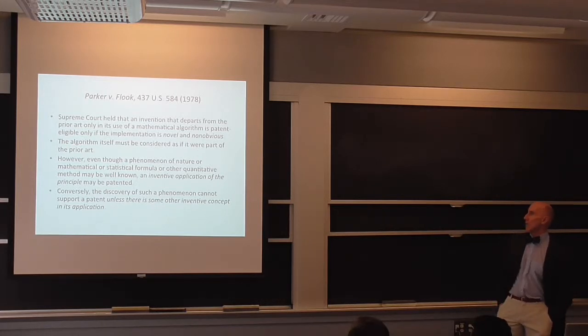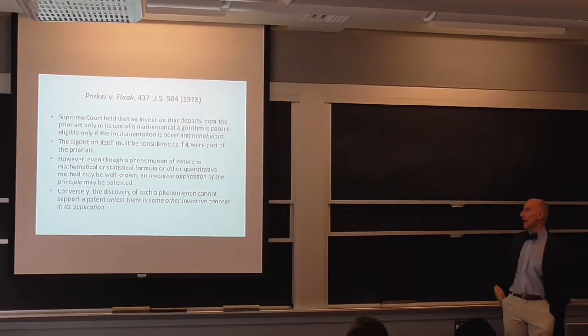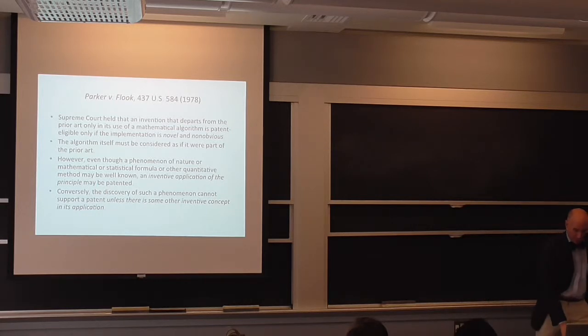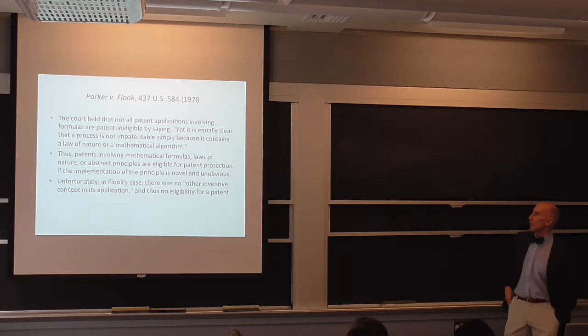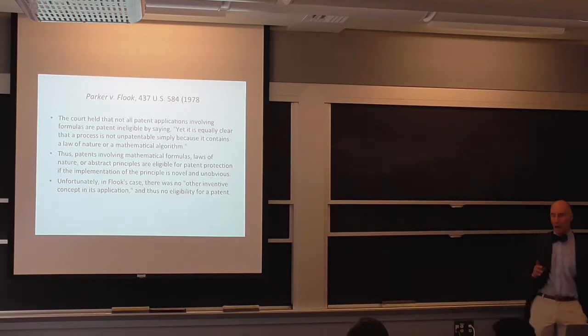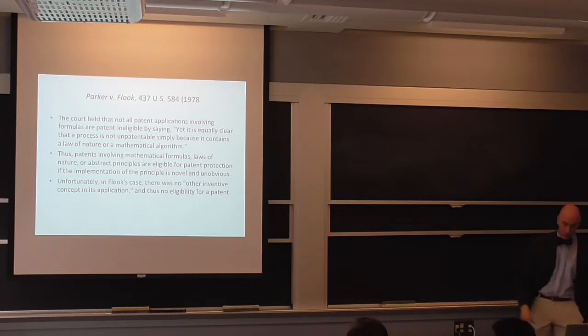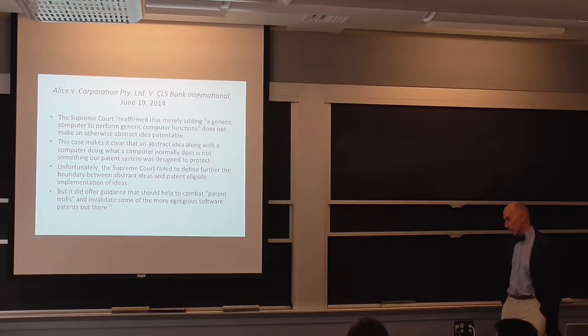But this is an important case because this is the first time the Supreme Court has created that daylight which all of the modern development in intellectual property law, the liberalization of what constitutes a patentable process has derived from. The algorithm itself must be considered as if it were part of the prior art. So the algorithm that you're building on is a mathematical formula. That's not patentable. It's the improvement on that on the prior art which is patentable. So even though a phenomenon of nature or mathematical or statistical formula or other quantitative method may be well known, an inventive application of the principle may be patented. Conversely, the discovery of such a phenomenon cannot support the patent unless there is some other inventive concept in its application. Thus, patents involving mathematical formulas, laws of nature, or abstract principles are eligible for protection if the implementation of the principle is non-obvious and novel. Unfortunately, as I said, Mr. Fluke, his catalytic converter algorithm was not considered novel.